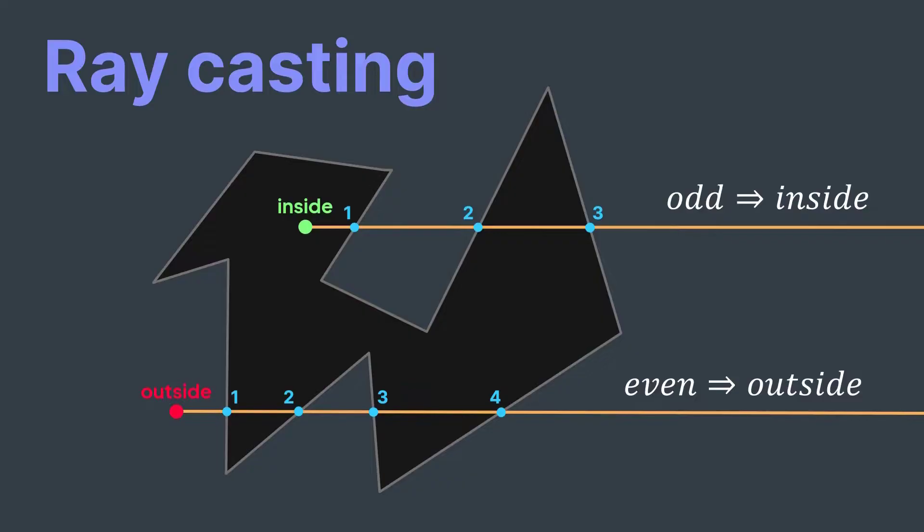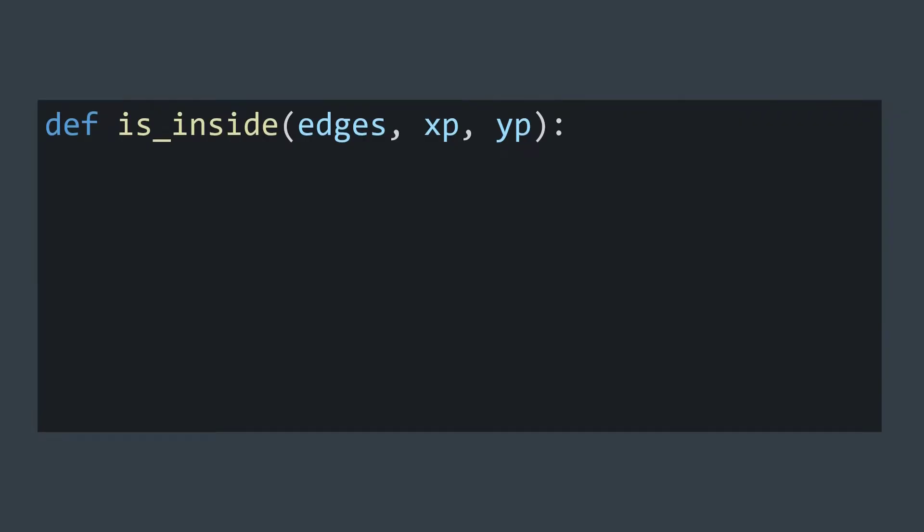How would we implement it? We need to count how many times our ray crosses one of the edges, so we can traverse edges of the polygon and increase the counter when the ray crosses the current edge. As input, we have a polygon represented by its list of edges, and a point xp, yp, the point we want to check if it's inside or outside. We create a counter that starts at zero.